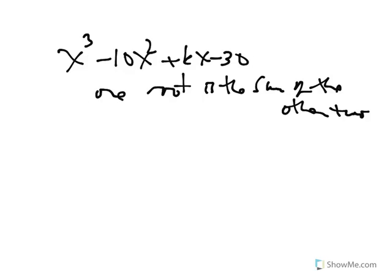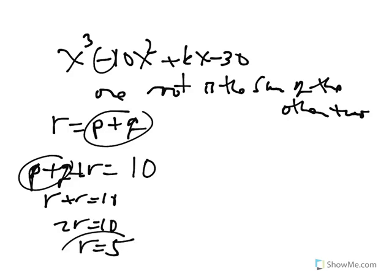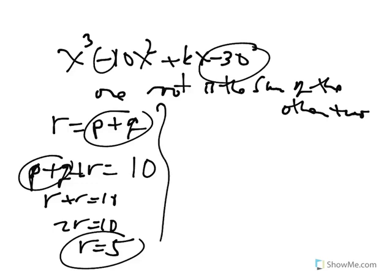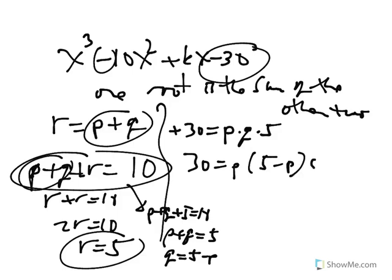In this configuration, the given information is that one of the roots is the sum of the other two. The sum of all three roots p plus q plus r equals positive 10. But since p plus q equals r, we get r plus r equals 10, or 2r equals 10, so r equals 5. Then I use the negative 30, which is the product of the roots: p times q times 5.